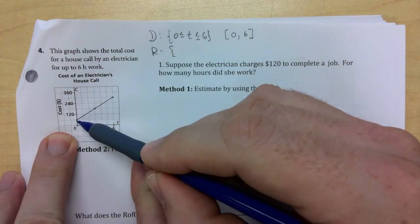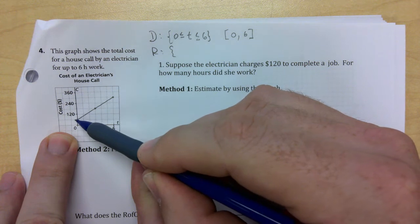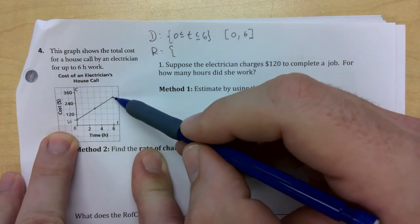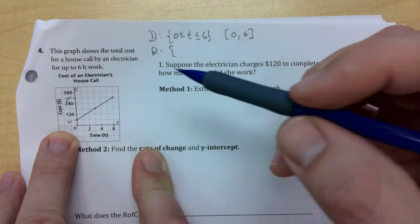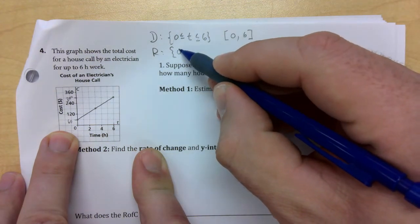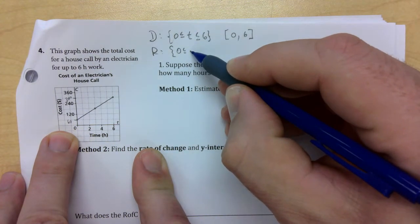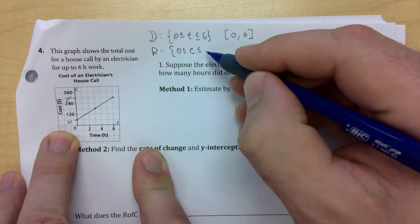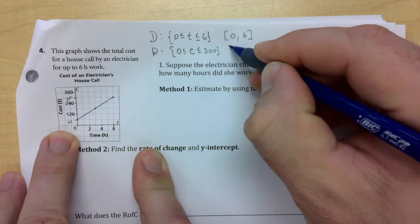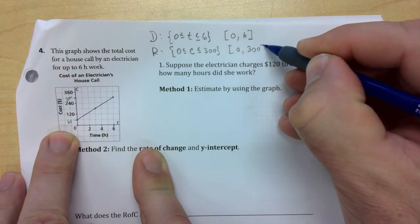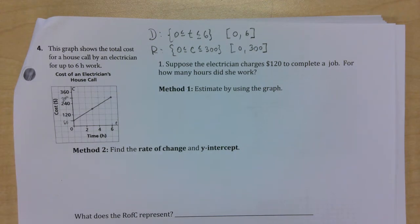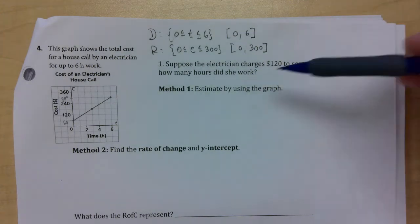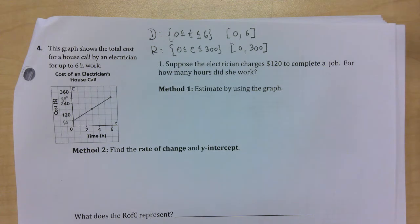For the range, this starts at 60 and goes all the way up to 300 — the scale is 60 here. So the range is from zero to 300. It's closed on both ends, everything is included. There are no open circles, so everything is included — that's how that works.